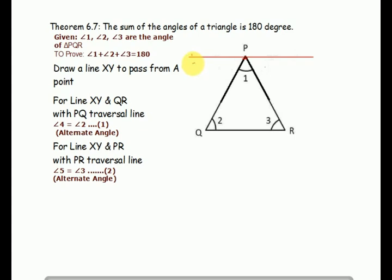This angle here is angle 4, and this angle here is angle 5. For line XY and QR where QR is parallel, and PQ is a traversal line.